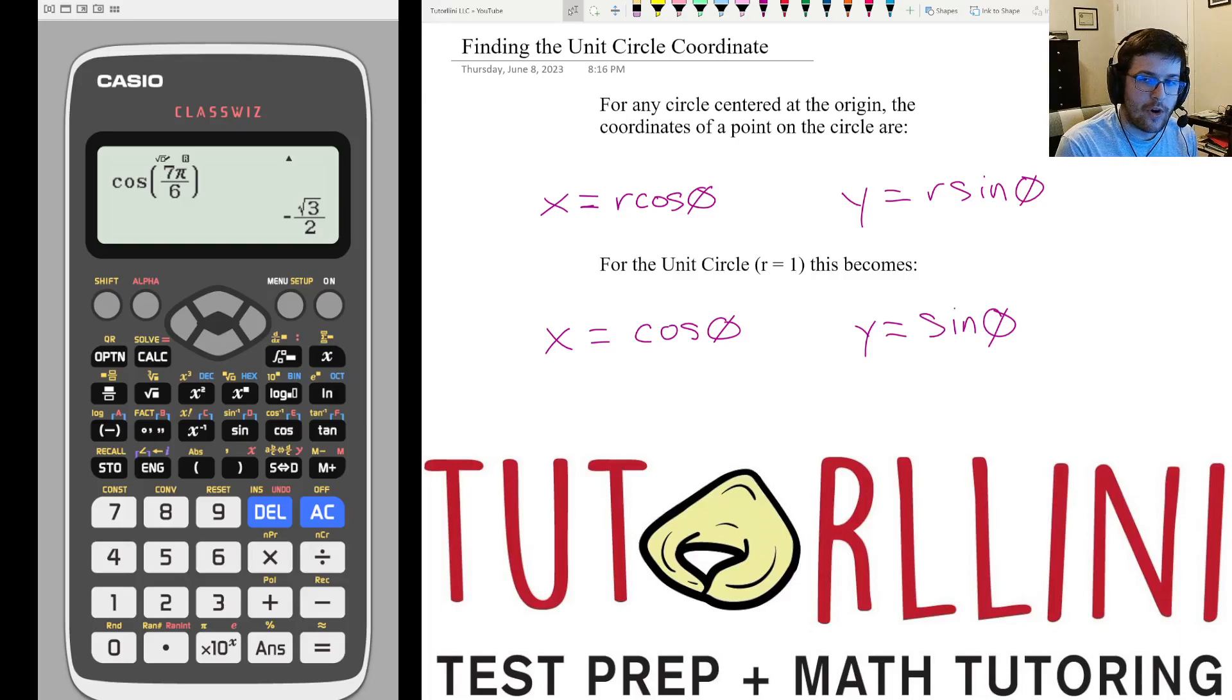where r is your radius and theta is your angle, and y equals r sine theta, where, again, r is your radius and theta is your angle. Now, if it's a unit circle question, which is often how it is on the SAT, r is 1. So you can just plug in 1, and these formulas become even nicer. So x equals cosine theta, and y equals sine theta. Let's quickly do one or two questions using this idea and what we learned before.